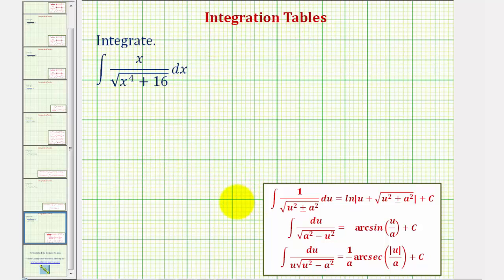If we look close enough, we should be able to find this integration formula here. Notice where the denominator is the square root of u squared plus or minus a squared.